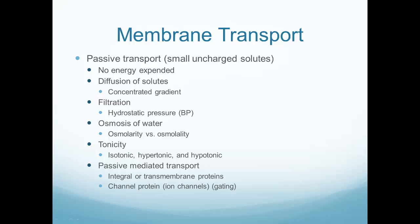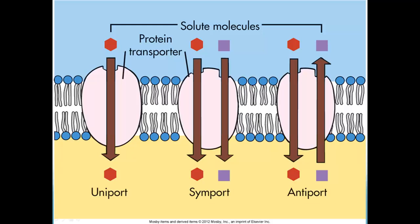Tonicity talks about osmolarity and osmolality — solutions can be very concentrated, normally concentrated, or have lower concentration, affecting how fluid moves. We can also have passive mediated transport, which doesn't involve energy but does involve specific proteins or channels that allow a substance, usually an electrolyte, to pass into the cell. This includes uniport — a protein transporter moving a solute into the cell — symport — two molecules moving in together because one won't move without the other — and antiport — moving one substance in while moving another out.